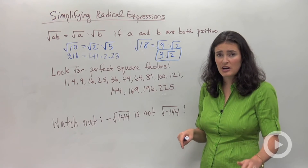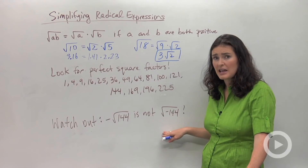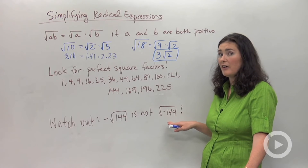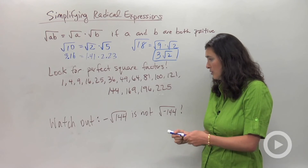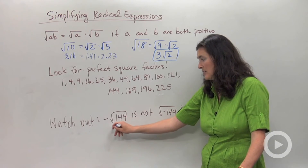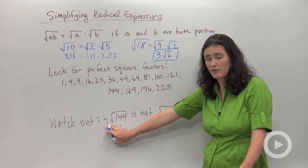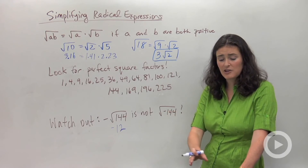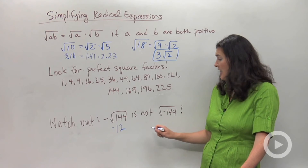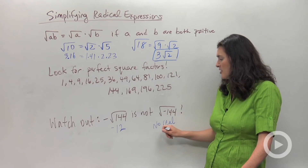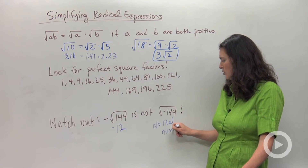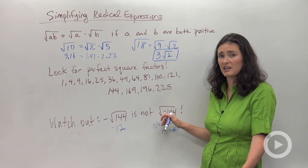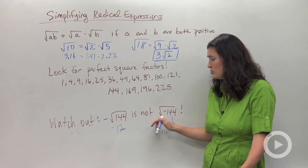One last thing before you start your homework: watch out for this important distinction. The negative square root of 144 is NOT the same thing as the square root of negative 144. The negative square root of 144 equals negative 12 — you take the square root of 144 and then make it negative. But the square root of negative 144, if you try it on your calculator, says error — there is no real number that when multiplied by itself gives you negative 144. Those are two really important distinctions.